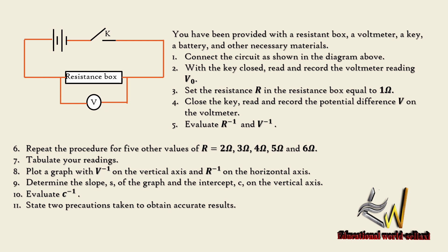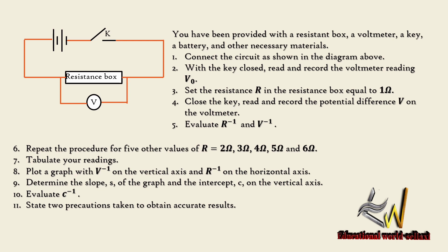Read and record the voltmeter reading V₀. Set the resistance R in the resistance box equal to 1 ohm, close the key, read and record the potential difference V on the voltmeter. Evaluate the inverse of R and the inverse of V. Repeat the procedure for five other values of R: two, three, four, five, and six ohms respectively. Tabulate your readings.